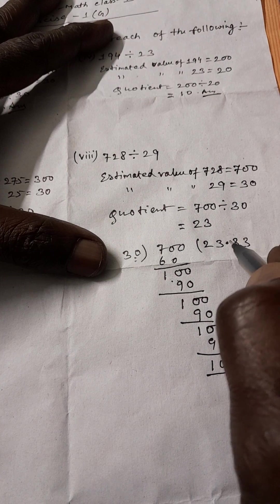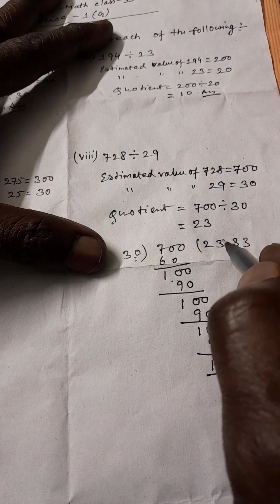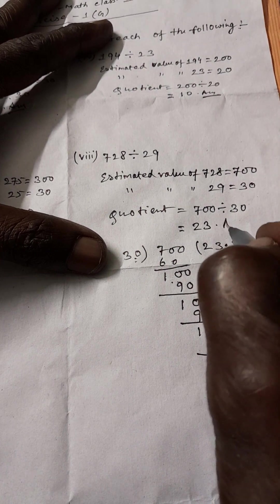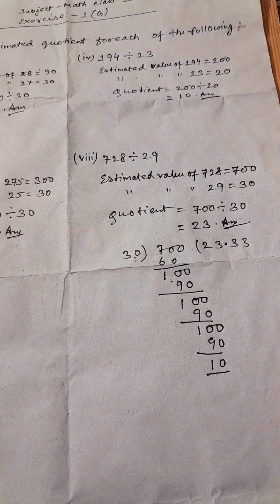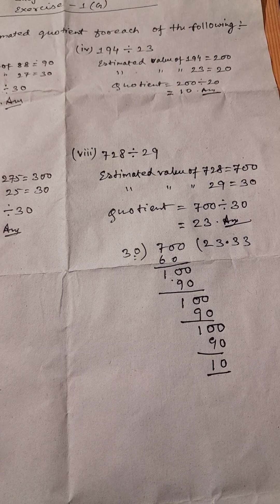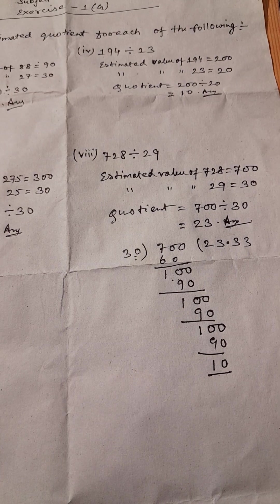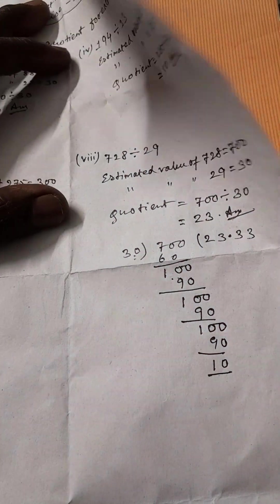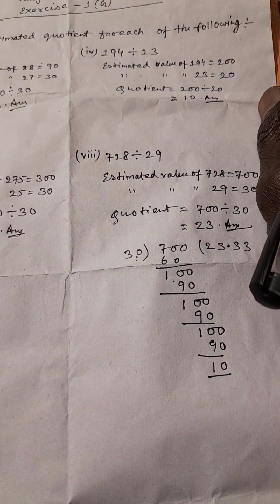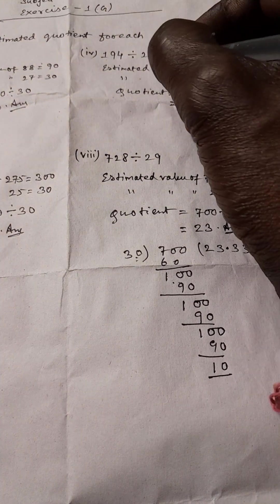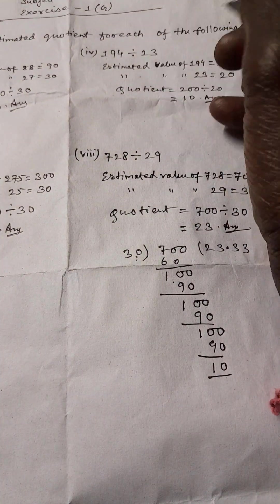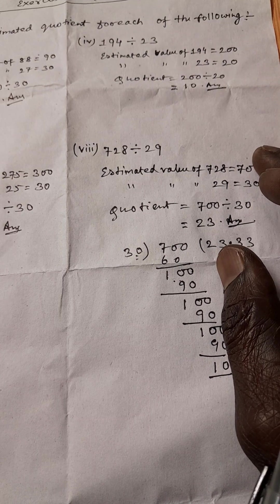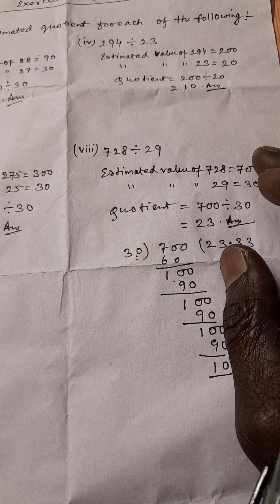Since 0.333 is less than 5, we take only 23 as the answer. So 23 is the answer to this question. In this way, you have to solve all the remaining problems. Try to solve all the questions by yourself — only 3 or 4 sums you have to do by yourself. If you have any problem, kindly ask me. Thank you.